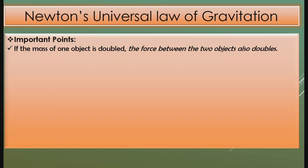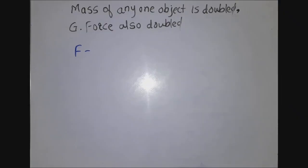We can see from the universal law of gravitation that F is equal to G into M1 into M2 divided by D squared. If the mass of any one object is doubled, then the gravitational force also doubles.